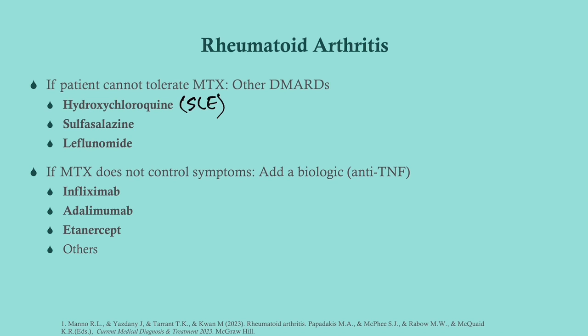If a patient wants to become pregnant, switch to hydroxychloroquine — methotrexate is absolutely contraindicated in pregnancy, as it is one of the most teratogenic drugs available. If methotrexate does not control symptoms, add an anti-TNF biologic such as infliximab, adalimumab, or etanercept. Importantly, before giving any anti-TNF drug, perform a tuberculin skin test (Mantoux) or an IGRA test to rule out latent tuberculosis reactivation.